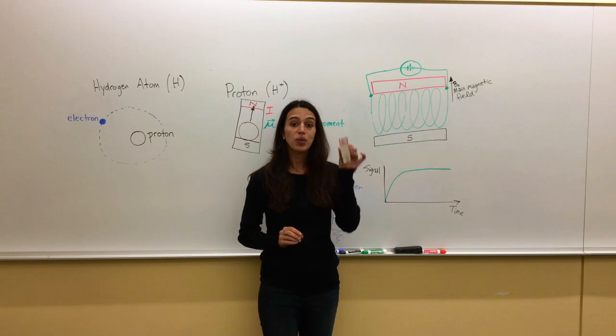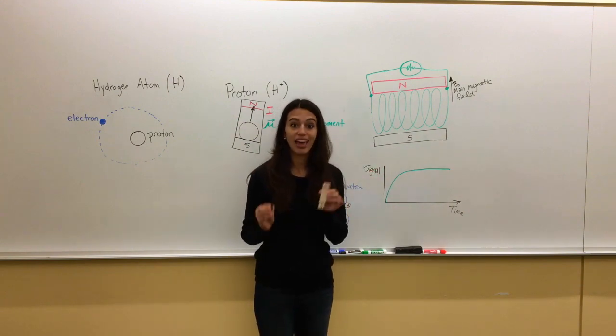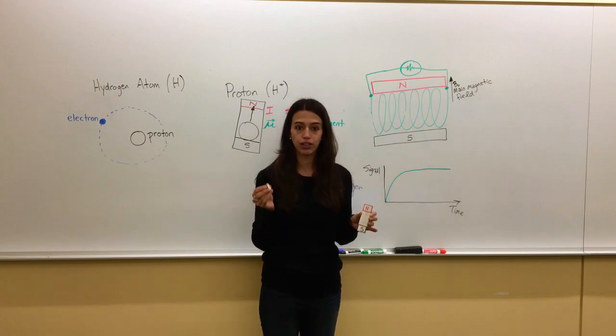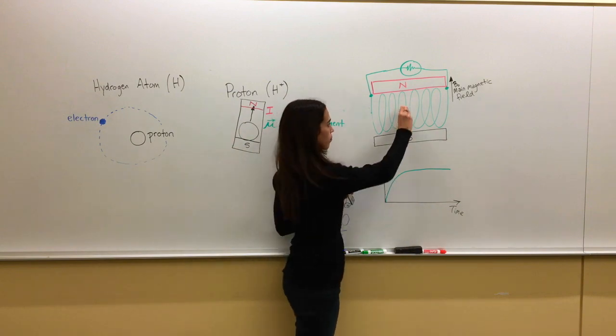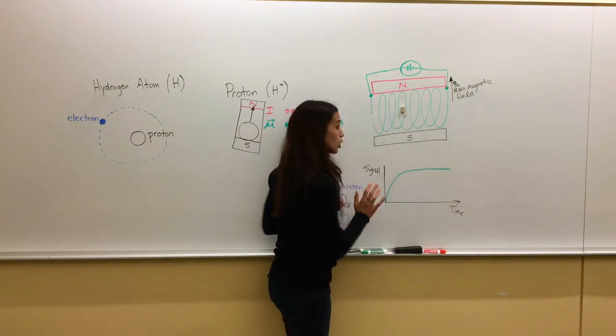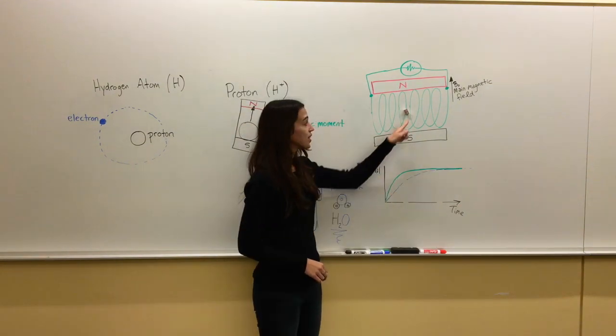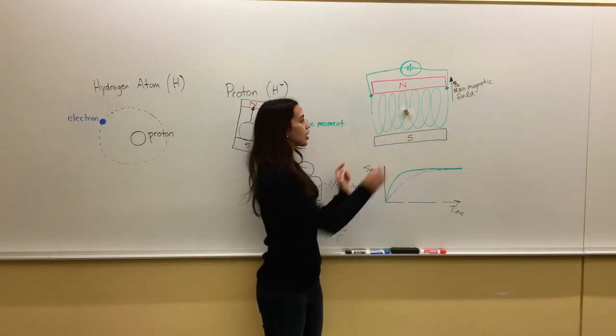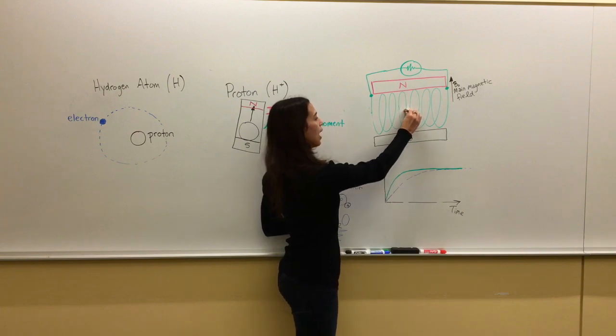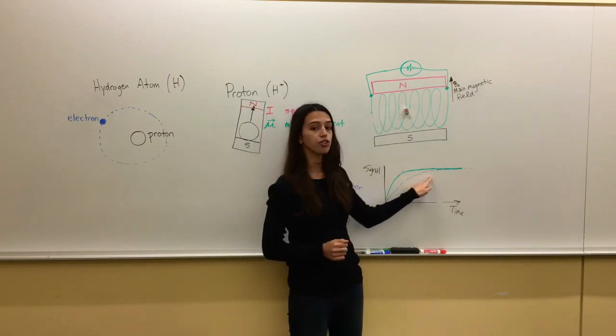Now remember, this is just what this one single proton is doing. There are lots of other protons in the body, and they might be behaving a little bit differently. So let's say this guy right here, it's going to take a little bit longer to realign with the main magnetic field. So its signal might look something like this. Because it's taking longer once we flip it to come back to equilibrium, it's going to have a signal that takes longer to reach equilibrium.